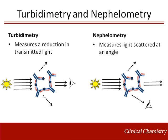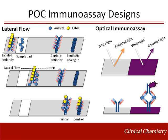Both turbidimetry and nephelometry make use of a spectrophotometer for the final measurement. Point-of-care immunoassays are popular in emergency situations and for in-home testing. Variations in design exist amongst vendors, with many including a porous membrane to draw in liquid sample and a labeled antibody. The antibody-analyte complex can be detected with a second capture antibody and a color development step or the use of colored microparticles.